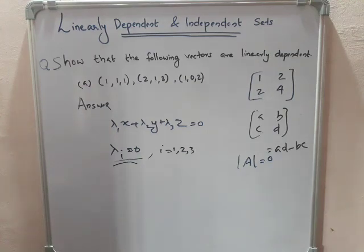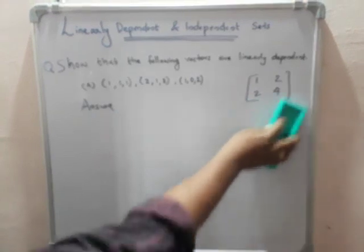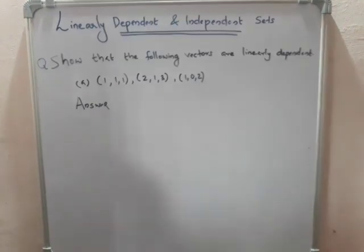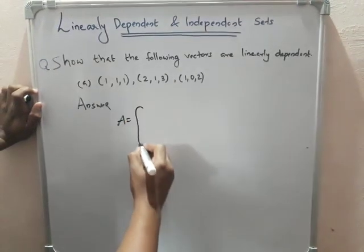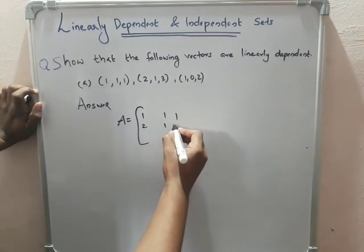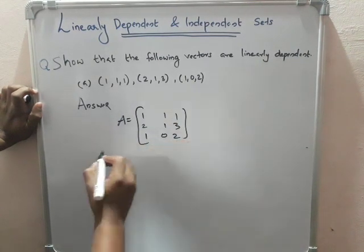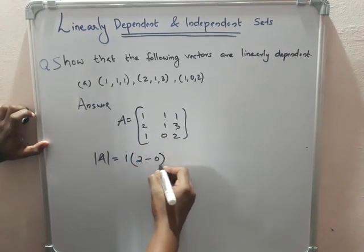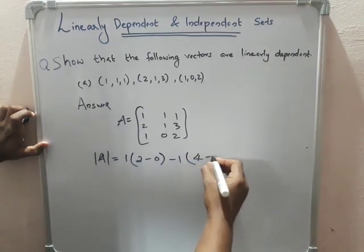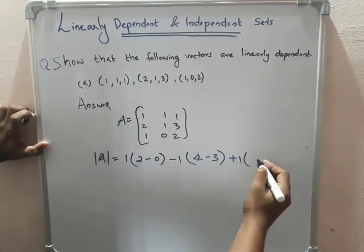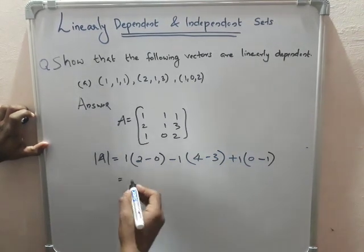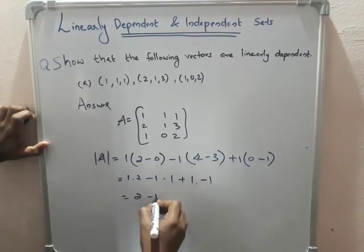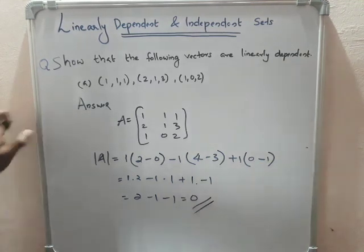I will do this problem in two methods. In the first method, we will use the matrix formula. The matrix is: 1 1 1 / 2 1 3 / 1 0 2. We can determine the determinant. The calculation is: 1 into (2 minus 0) minus 1 into (4 minus 3) plus 1 into (0 minus 1), which equals 1 into 2 minus 1 into 1 plus 1 into minus 1, giving 2 minus 1 minus 1, which equals zero.